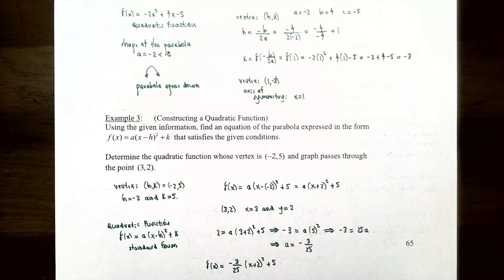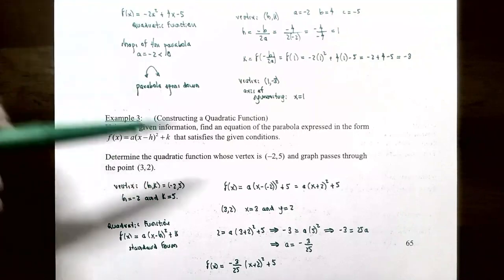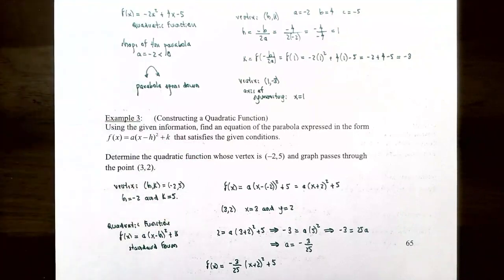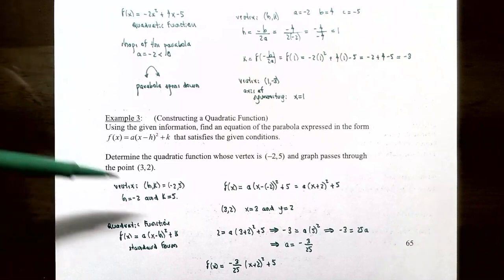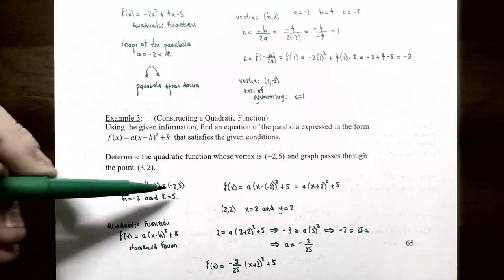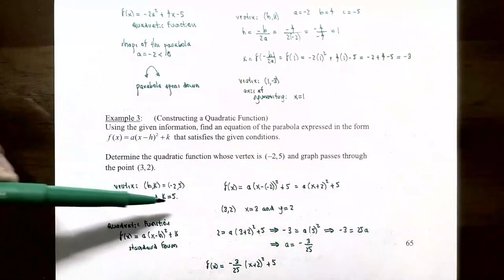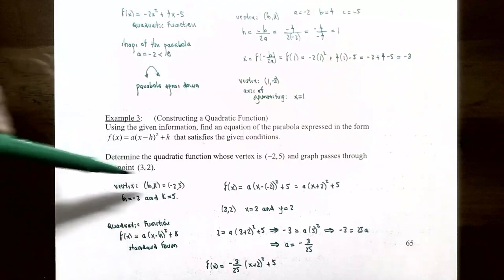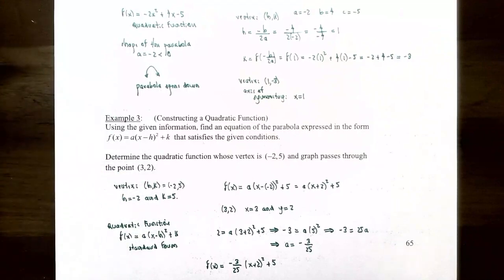We're going to write the quadratic function in vertex form satisfying the given conditions: vertex is (-2, 5) and the graph must pass through the point (3, 2). If the vertex is (-2, 5), then h = -2 and k = 5. Let's substitute that into the vertex form. We'll have x subtract negative 2 — so x plus 2 — squared, plus 5 outside. So f(x) = a(x + 2)² + 5. We don't know a yet.